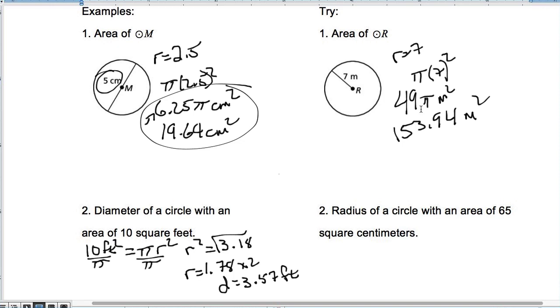All right, now, this one, I tell you the area is 65 centimeters squared. It's going to do 65 centimeters squared is equal to pi r squared. So we're going to divide, again, both sides by pi. So here, if we take 65 and divide it by pi, we have 20.69 is equal to r squared.